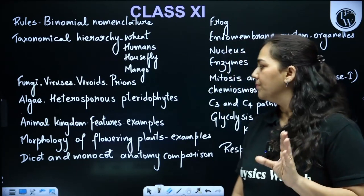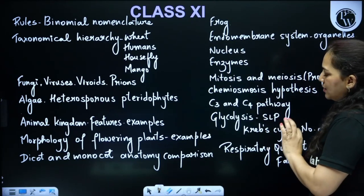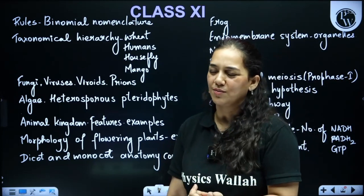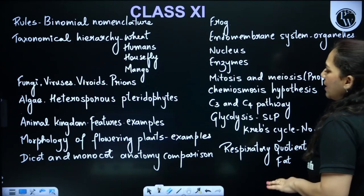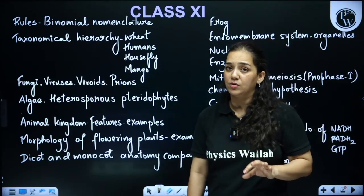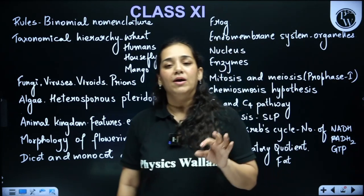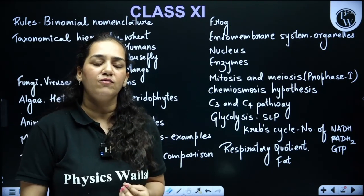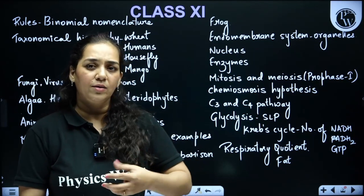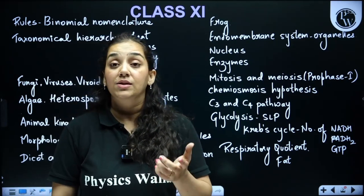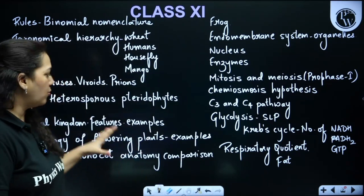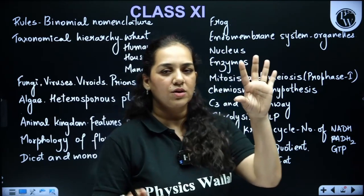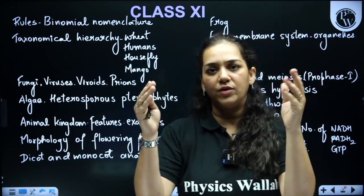In Morphology of Flowering Plants, examples can be picked from anywhere in the chapter. Family Solanaceae is quite important — you should know how to read the floral formula, read or create a floral diagram, and know the examples. These are very important within the morphology chapter.